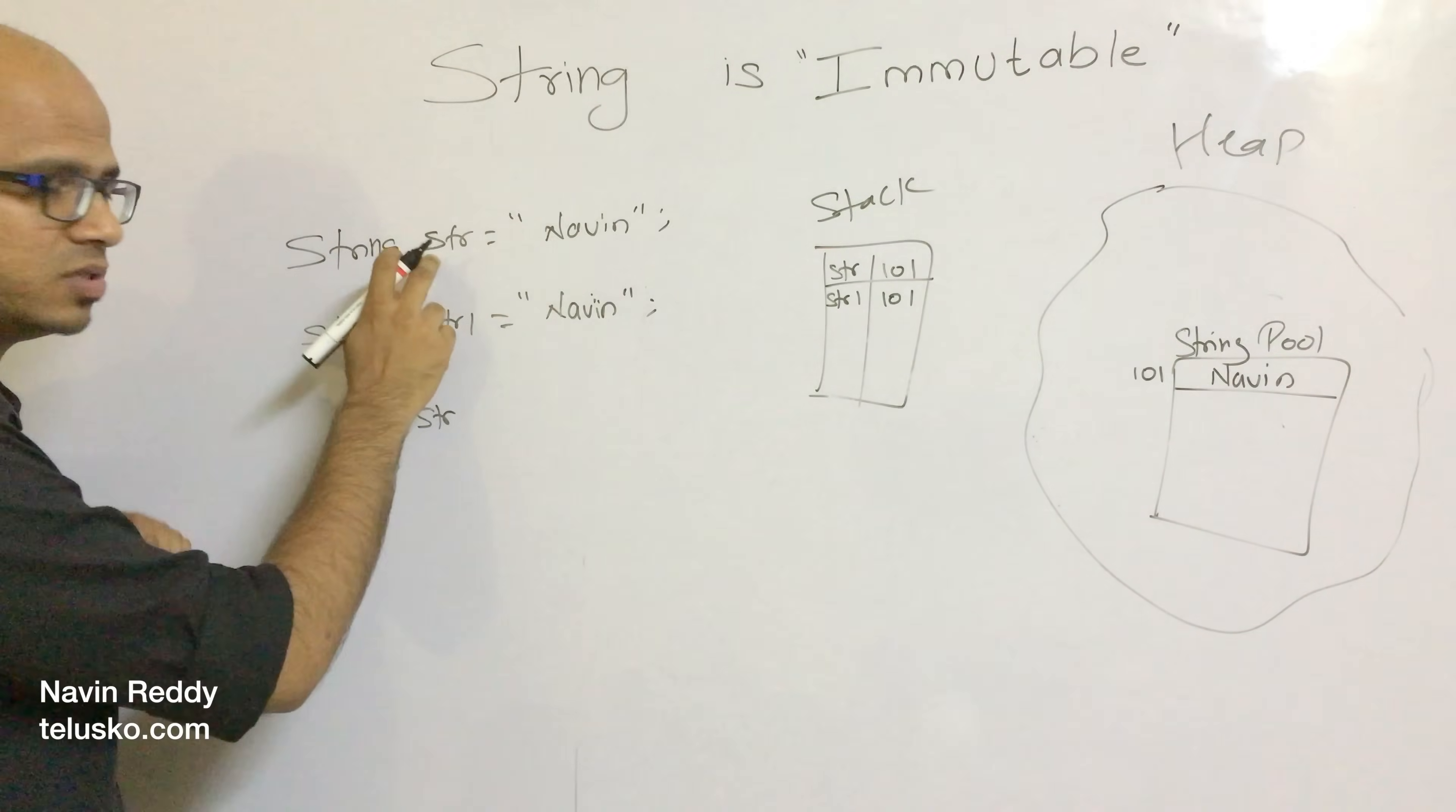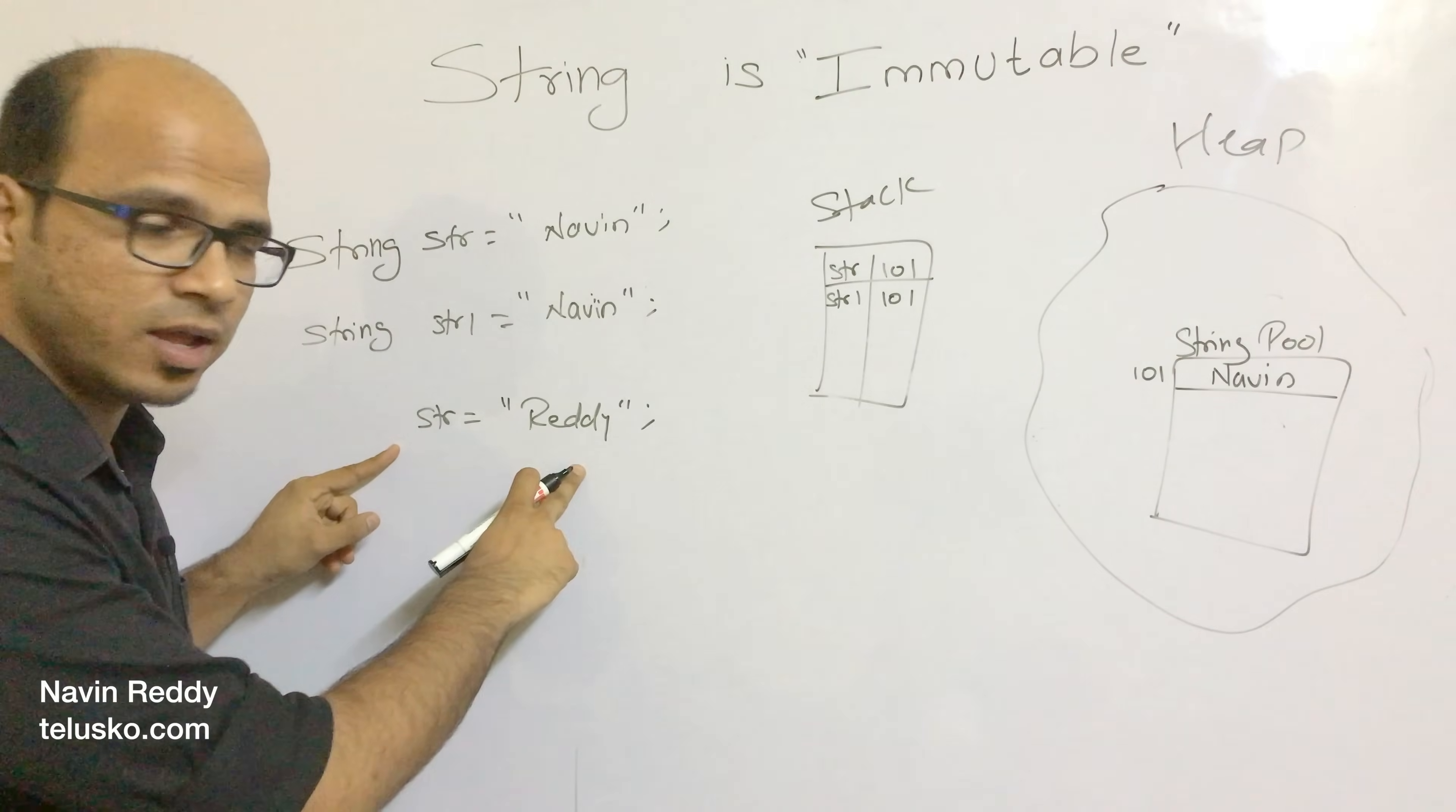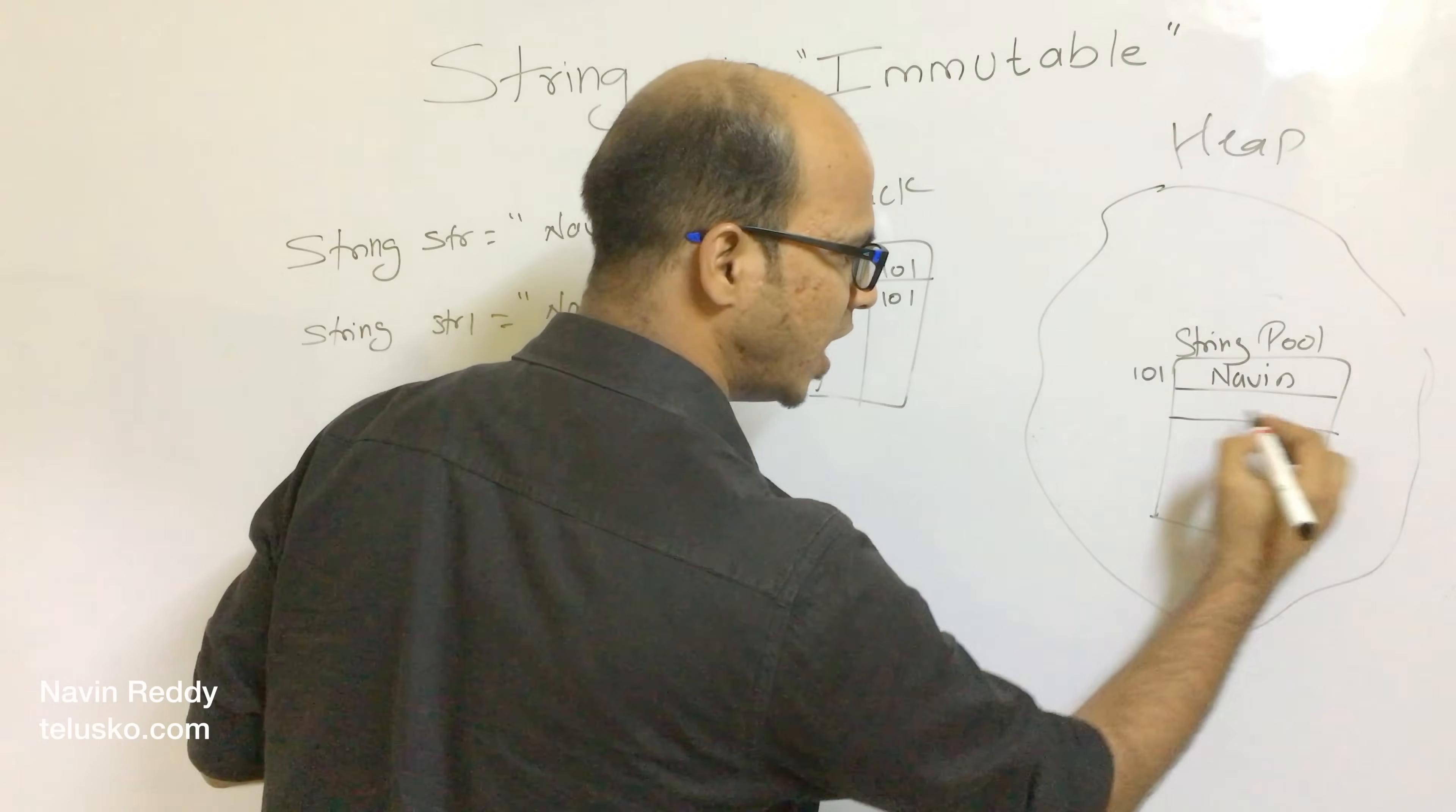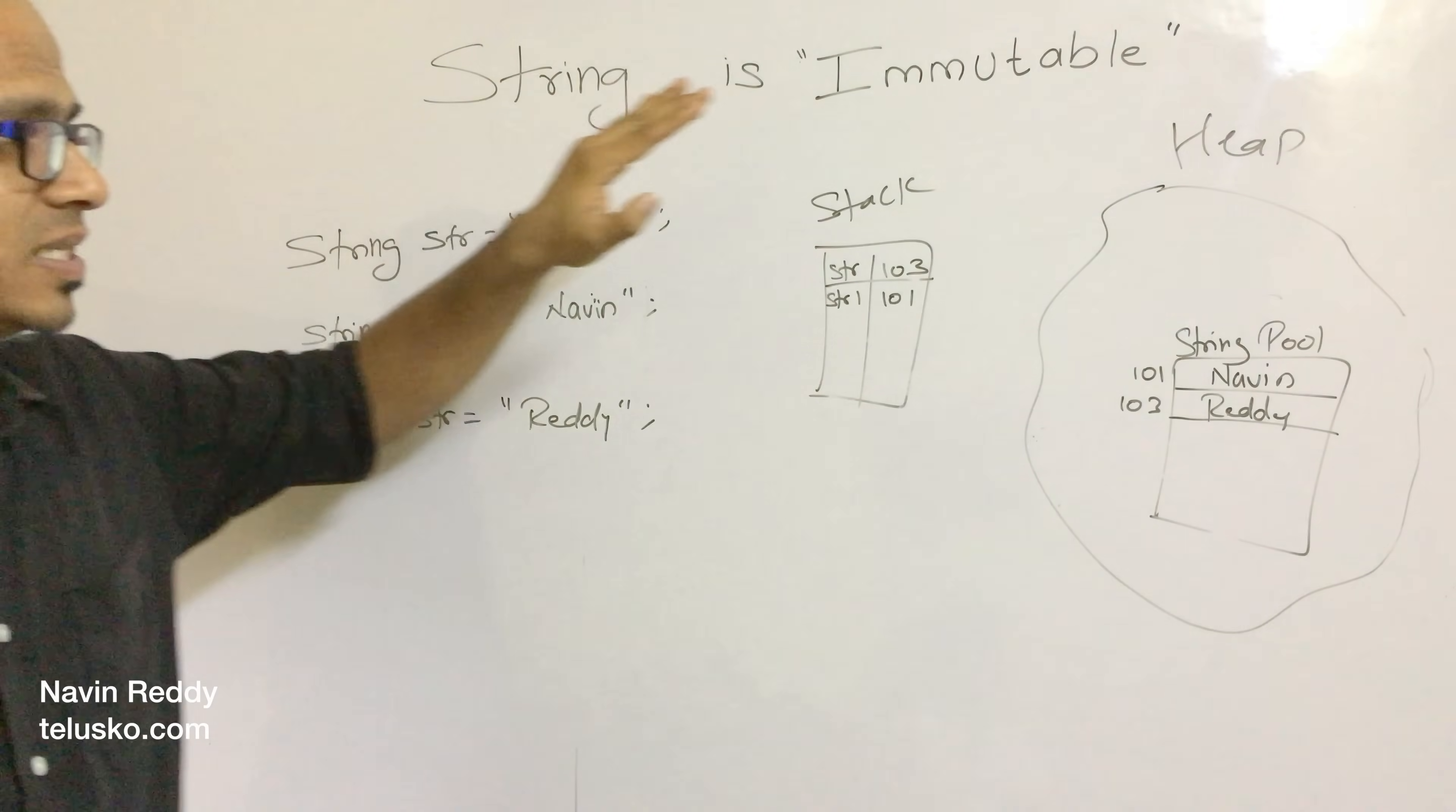Now what if I take STR and say STR equals ready? If I change this, what will happen? Will it change the existing name? Of course not, because if STR is changing to ready at 101, that means it will also affect STR1. That should not be the case. That's why this will create a new object here with value ready at address 103. Now 101 will be replaced by 103. That means you are changing the value of the reference, but you are not changing the actual value.